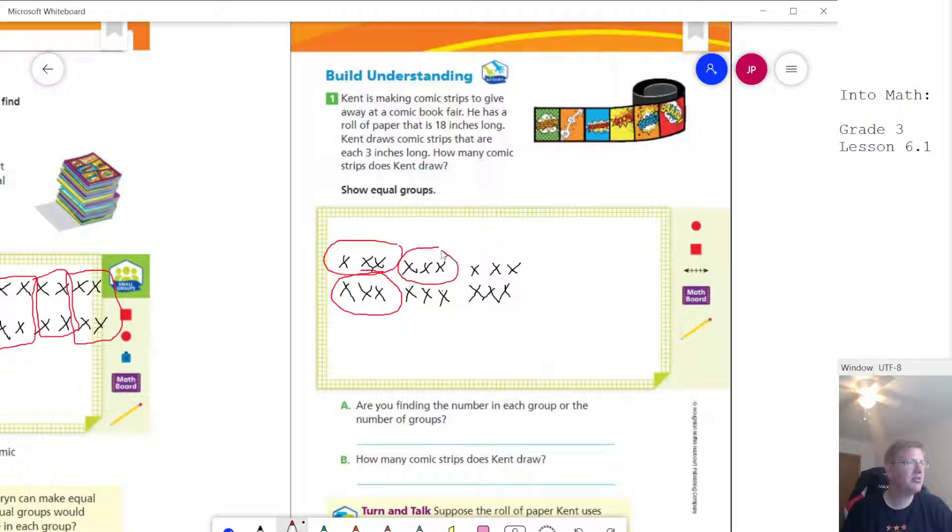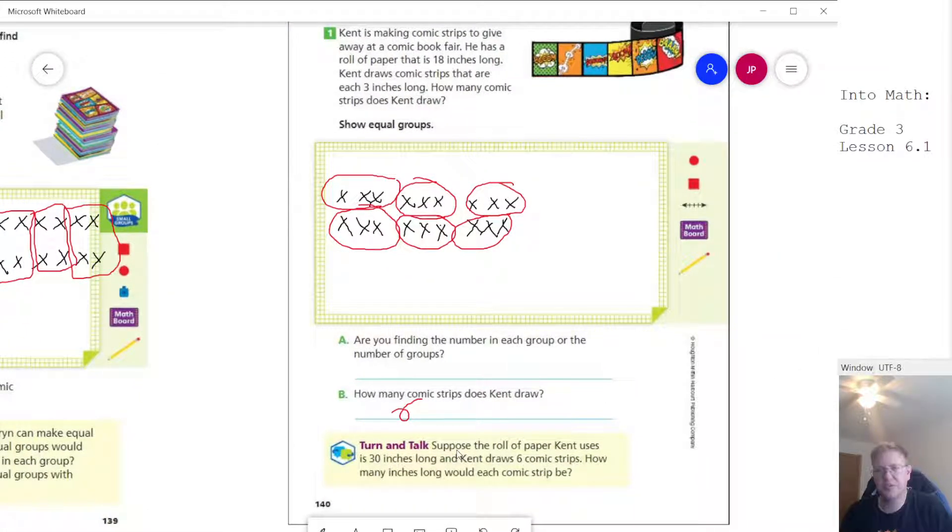I would start with 18 counters and then circle groups of 3. When I do that, we're going to end up with six total groups. The turn and talk says: suppose the roll of paper Kent uses is 30 inches long instead of 18, and we want to draw six comic strips. How many inches long would each comic strip be?